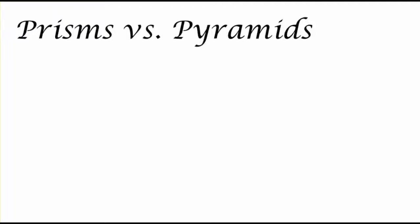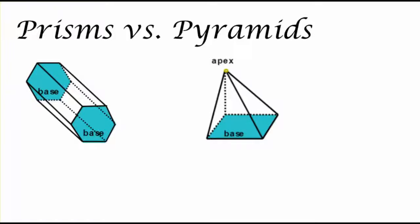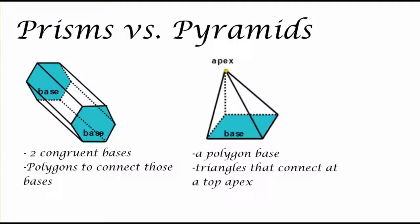Polyhedrons can come into two basic categories: prisms and pyramids. A prism is defined by its two congruent bases and a connection of those bases, and the pyramid is defined by its one base and its lateral faces all facing towards the apex. With the prism, those polygons are connected by the lateral areas, and with a pyramid, our lateral areas, which are usually triangles, all connect at a top apex.